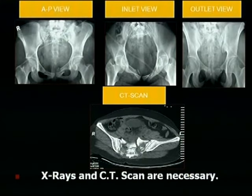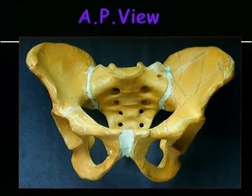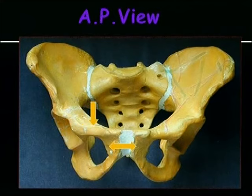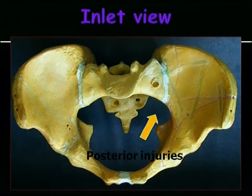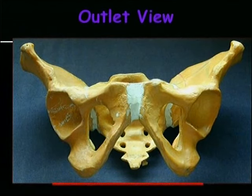Once you have a fracture pelvis, if the patient is stable you can obtain an AP view, inlet view, outlet view, and CT scan. If the patient is unfit to be shifted to the X-ray department, the imaging must be done on the casualty table. On the AP view you see the pubic symphysis, the rami, sacral foramina, and sacral fractures. The inlet view is a good indicator of the sacroiliac joint. The obturator view gives a good indicator of the pubic body, pubic symphysis, and the level of the ischial tuberosities, and can tell you whether there is a vertical shear.